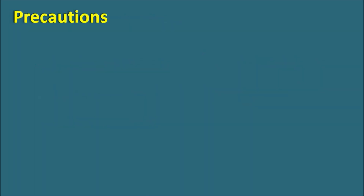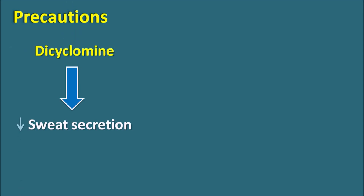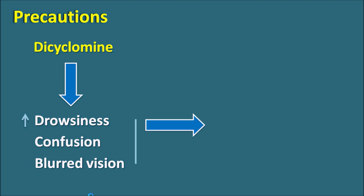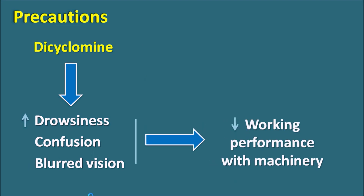What are the precautions? One important precaution is that Dicyclamine can reduce sweat secretion. As sweat secretion is reduced, heat dissipation is also reduced, which may increase heat stroke as well as fever. So Dicyclamine carries a risk of heat stroke in elevated temperatures. Similarly, Dicyclamine can increase drowsiness in patients and can produce confusion and alteration of mental status. Apart from these central effects, it can also produce blurred vision, all of which may impair the motor activity of patients and reduce working performance with machinery.